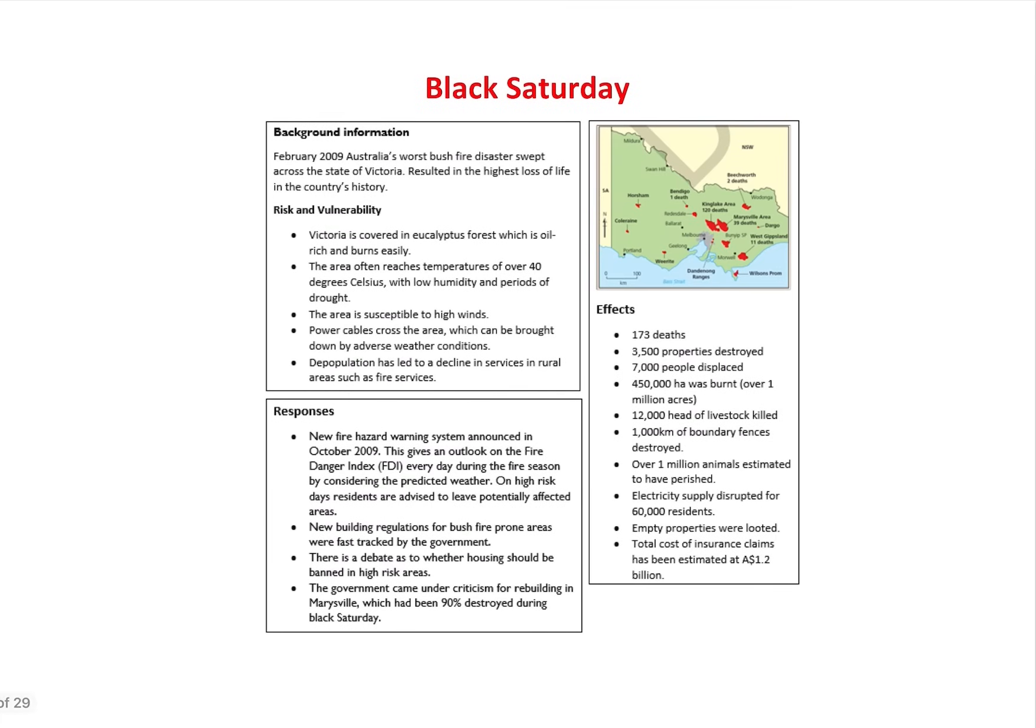And that leads us on nicely to your final case study of Black Saturday. It's February 2009, Australia's worst bushfire disaster. The risk and the vulnerability here is covered in lots of eucalyptus forests, so it's going to burn pretty easily. It reaches temperatures of over 40 degrees Celsius. Effects wise, three and a half thousand properties destroyed, seven thousand people displaced, but only 173 deaths. Over a million animals estimated to have perished. I think perhaps that's why it's most significant environmentally.